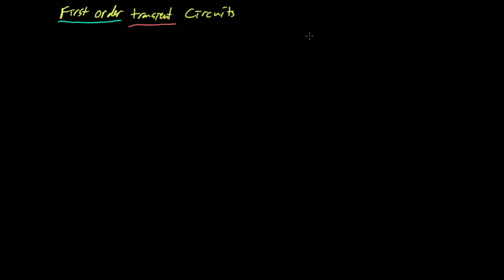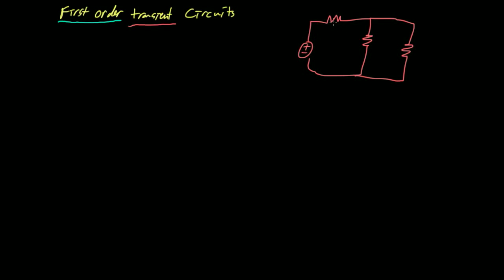Keep in mind all the examples we've been doing so far in a circuits class — we've had circuits with an input voltage and some configuration of resistors, and you've been asked questions like: find the voltage across this resistor, or the current going through that resistor, or the current in a certain branch of the circuit.